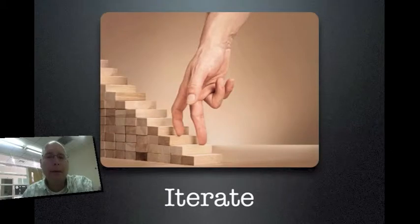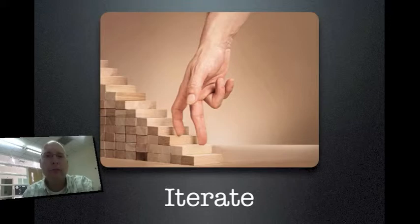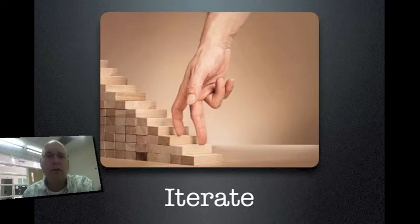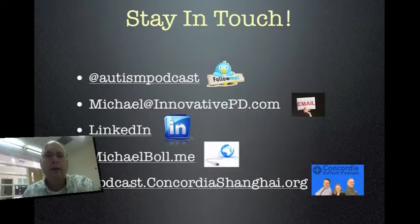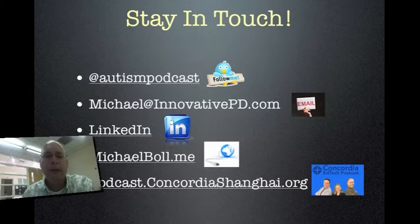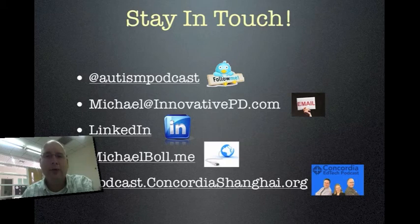Iterate — take it step by step. Do a basic concept, a basic rollout, check it out, evaluate it, and then make the next one better. It's not fair to roll something out, find some problems, and say it's a dumb idea. Rather, you're learning from that iteration and looking for ways to improve. That's why you have version one, version two, version three — in the software world this is totally normal and it should be normal in education as well. That's all I've got for you. If you want to follow me on Twitter, it's Autism Podcast. You can email me at michael@innovativepd.com, check out my LinkedIn, website at michaelbohl.me, and our podcast at podcast.concordiashanghai.org. Hope you enjoyed this — have a great day.